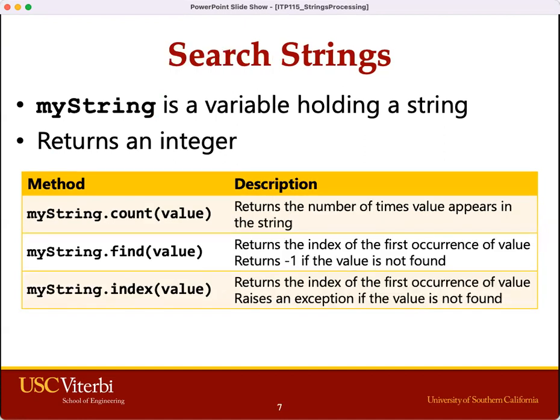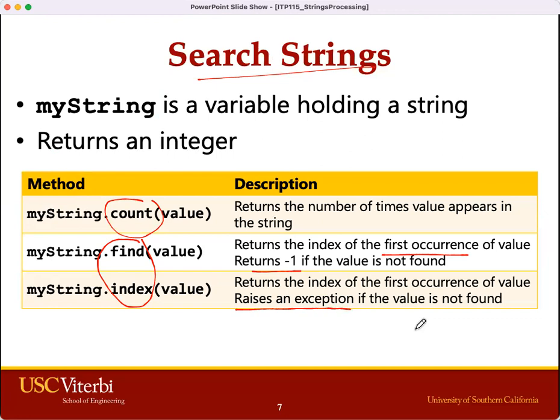We can also search within a string. count will return the number of times a value appears in the string. Both find and index will return the index of the first occurrence of the value. However, when the value is not found, find will return -1, whereas index will raise an exception.